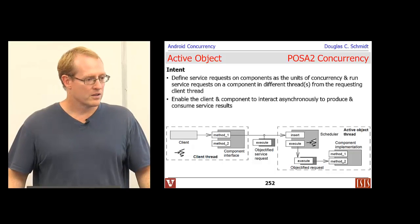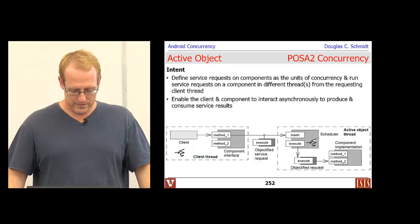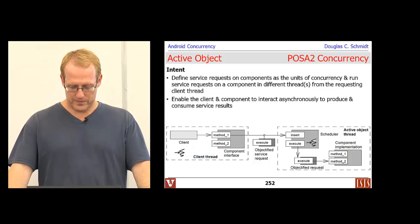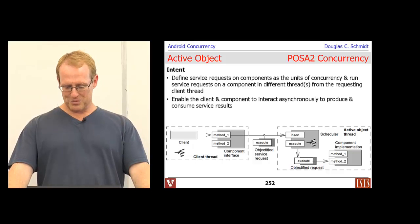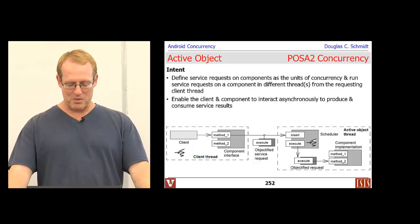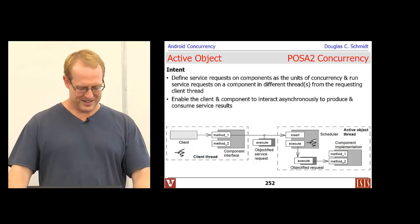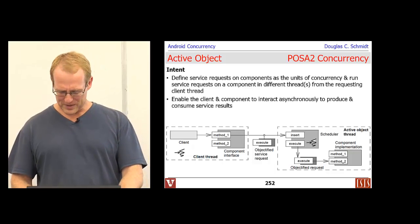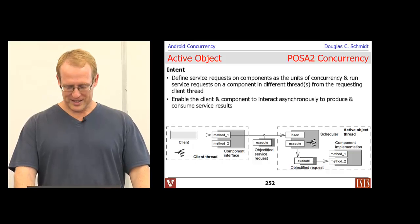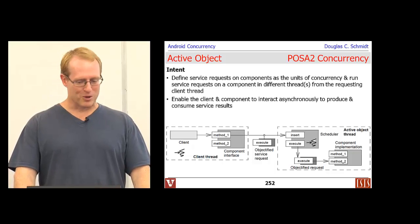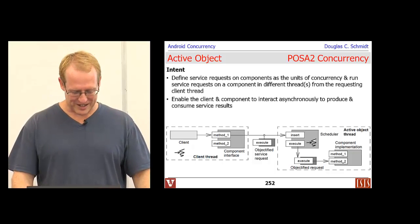A student pointed out that in the diagram, method one is being called but method two is labeled on the servant side. That's a typo — it should be method one getting called. There's also a paper on the instructor's website that talks more about this, and you can look at the POSA 2 book where the full-blown pattern is described.